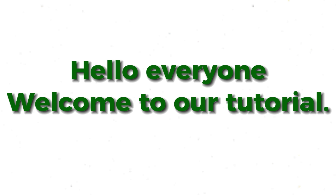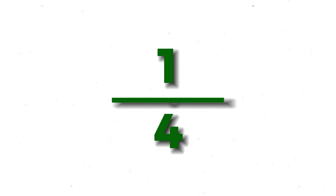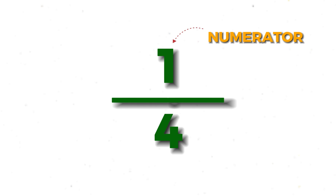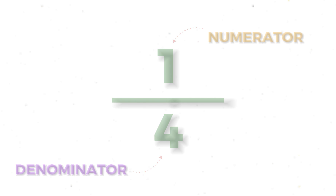Hello everyone, and welcome to our tutorial. Today we will learn about the basics of fractions — the unit fraction. A fraction is a way of expressing a part of a whole. It consists of two numbers separated by a horizontal line. The top number is called the numerator and the bottom number is the denominator.